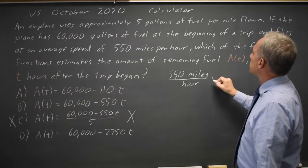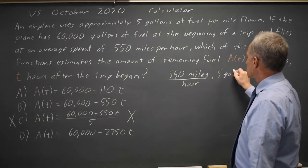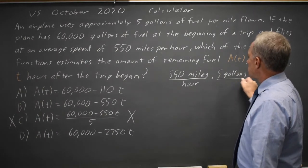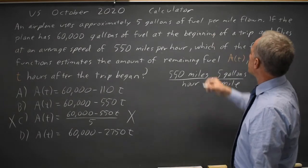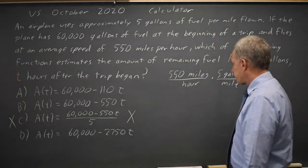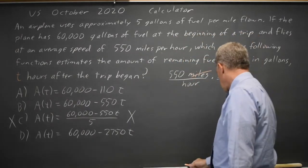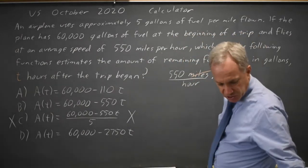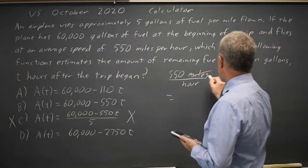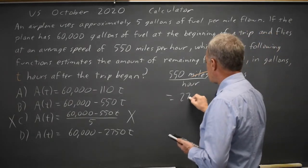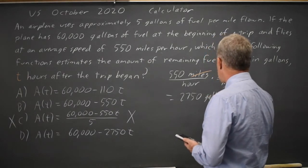And then we multiply by 5 gallons per mile because we use 5 gallons for each mile flown. The miles cancel. Leaving us, if I check my calculator, with 550 times 5 is 2750 gallons per hour.